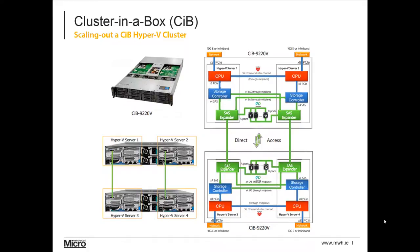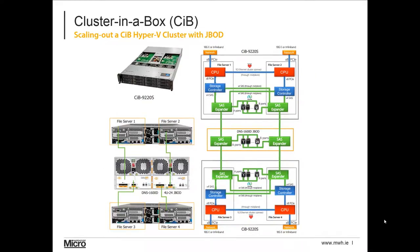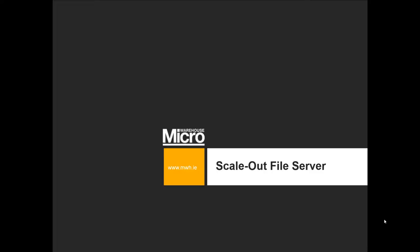Another solution is daisy-chaining a pair of CIBs together. With two 9220s connected, the four servers across both enclosures form one cluster and share both JBODs — servers in enclosure one can access disks in enclosure two and vice versa, giving a single pool of capacity. Alternatively, a pair of CIB units can both connect to a common DNS1600D JBOD, giving 12 disks in enclosure one, 12 in enclosure two, and 24 in the shared JBOD — quite a bit of total capacity.